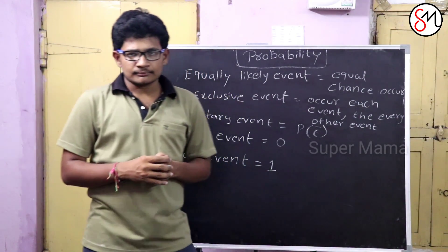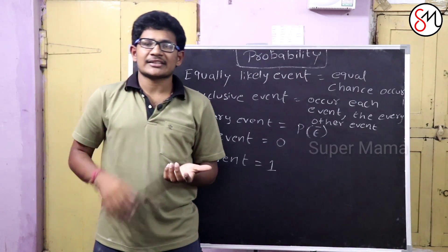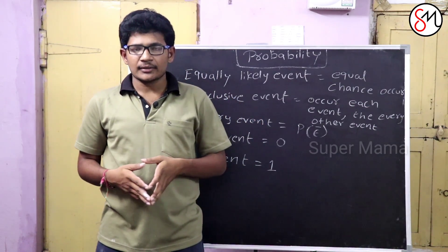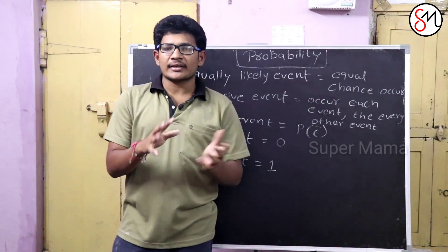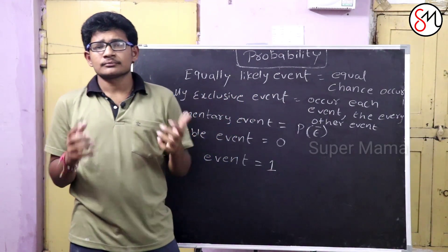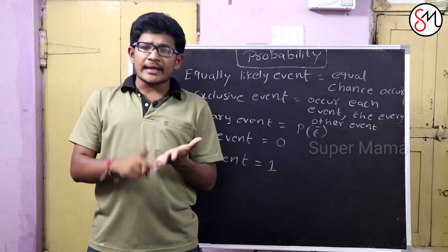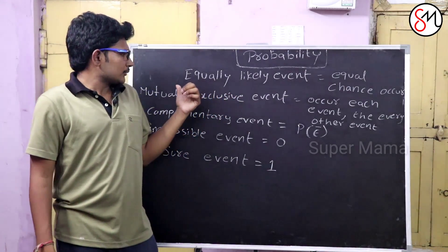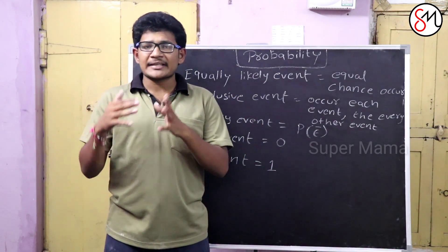Next, mutual exclusive events. Two events — if one event happens in one place at one time, the other cannot happen at the same time and place. That is a mutual exclusive event.